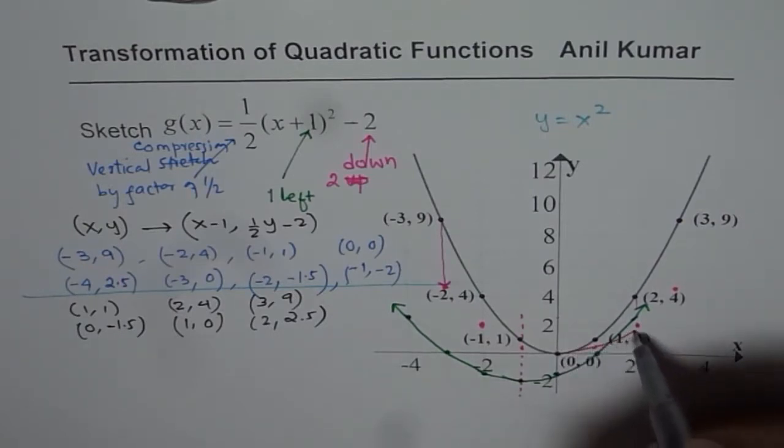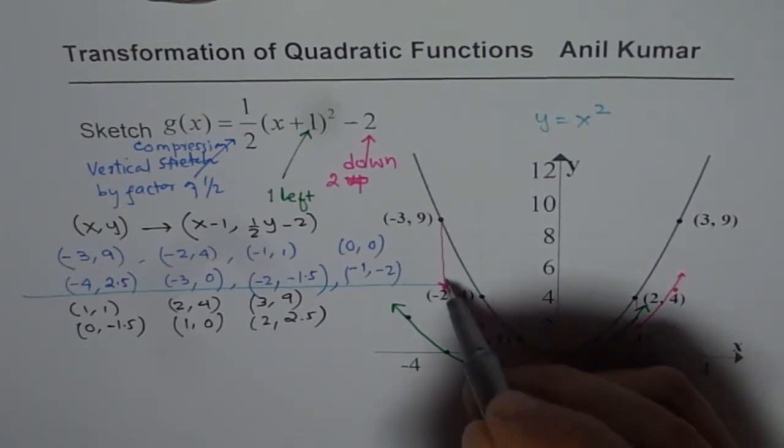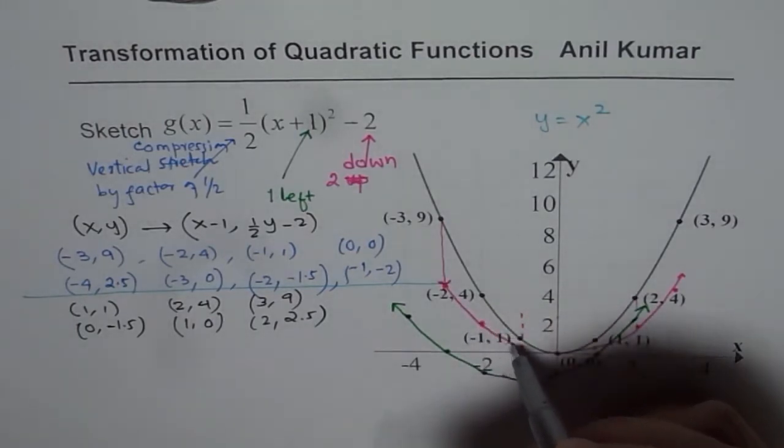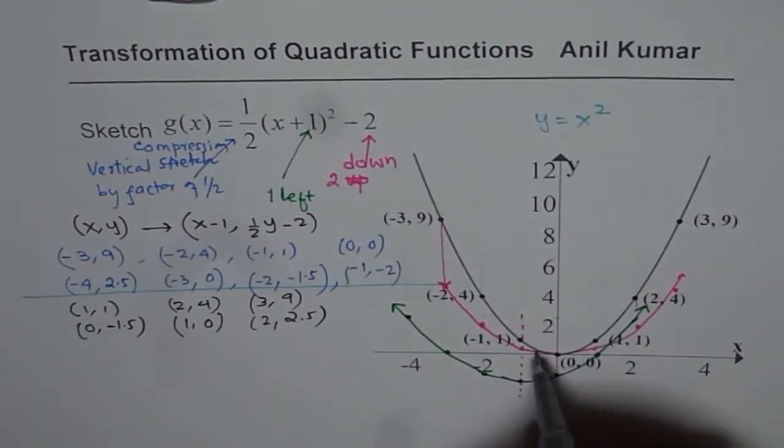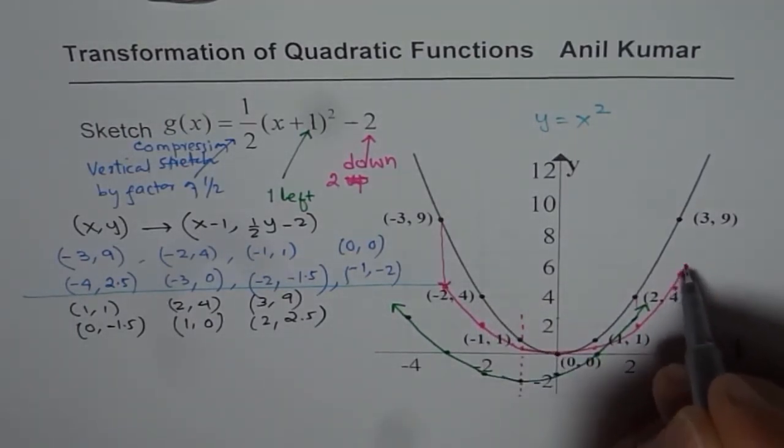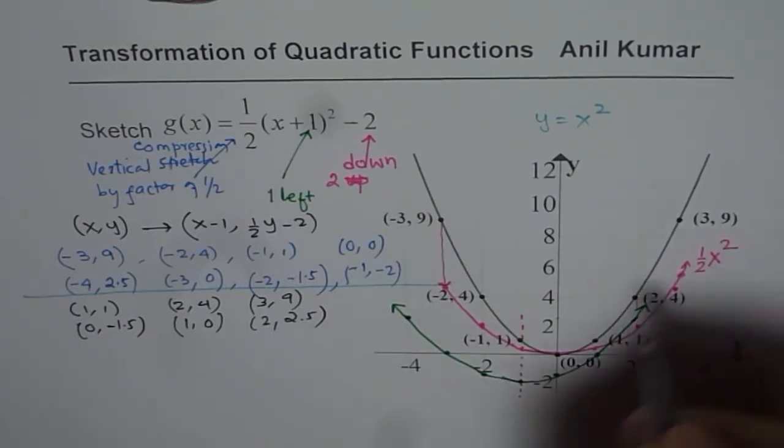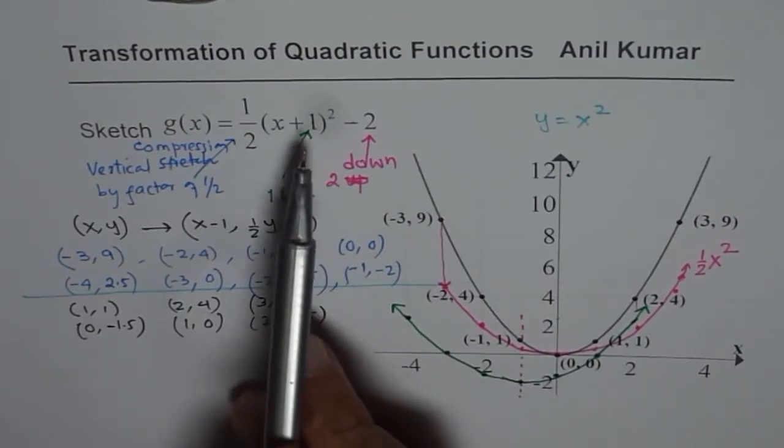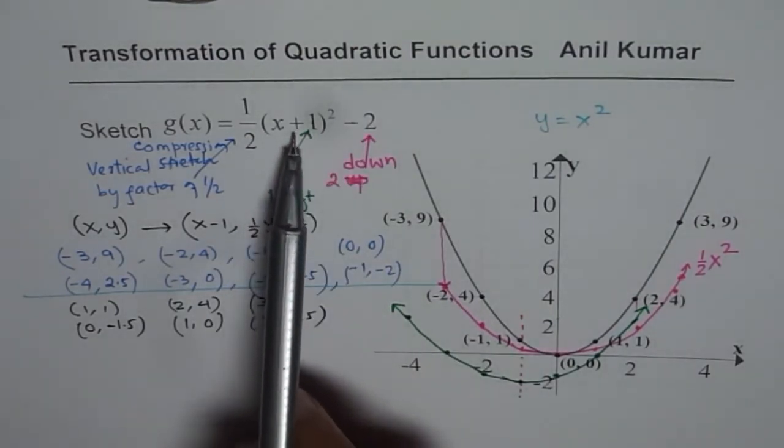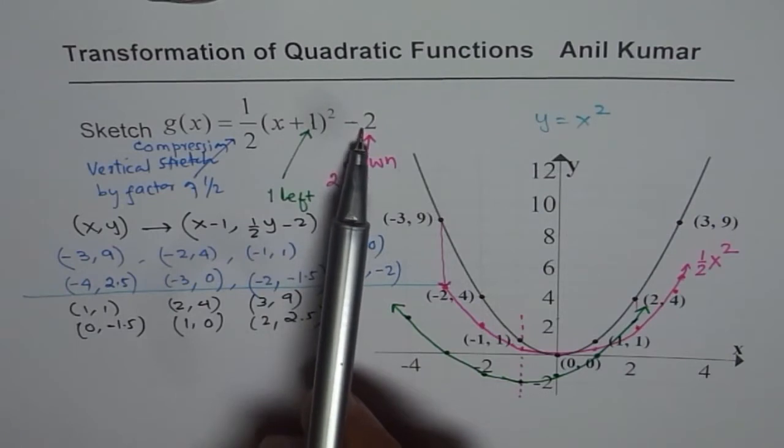So what you have is this kind of a function. This is after compression. Vertical compression. So that is what you get after compression. So let me write this as 1/2 of x². After compression, you could do both the translations. That is, left by 1 and 2 down.